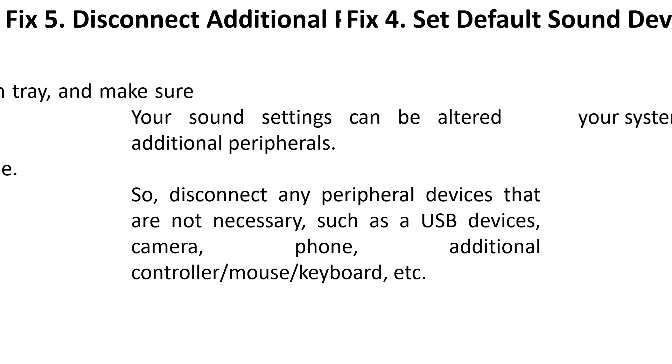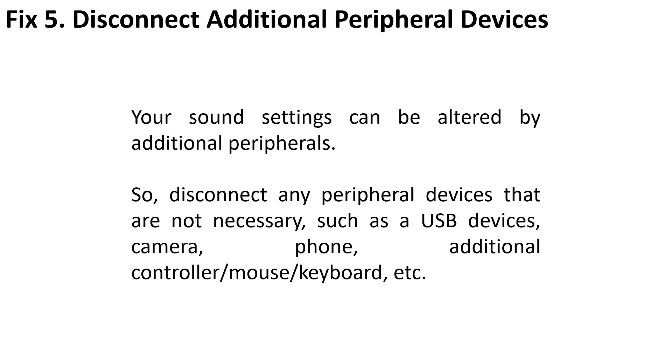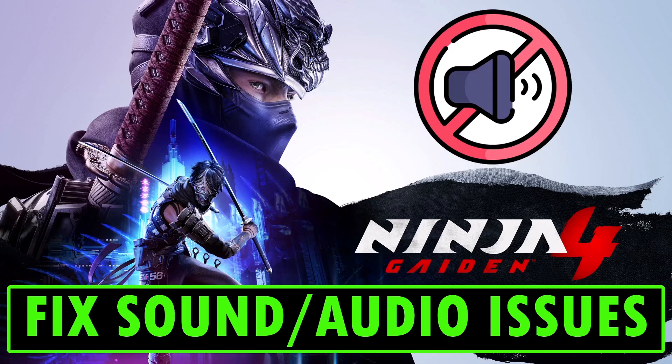Fix six: disconnect additional peripheral devices. Your sound settings can be altered by additional peripherals, so disconnect any peripheral devices that are not necessary, such as USB devices, camera, phone, additional controller, mouse, keyboard, and so on. Then check if the audio issue is resolved. These are all the fixes you can try to solve sound or audio issues in Ninja Gaiden 4.